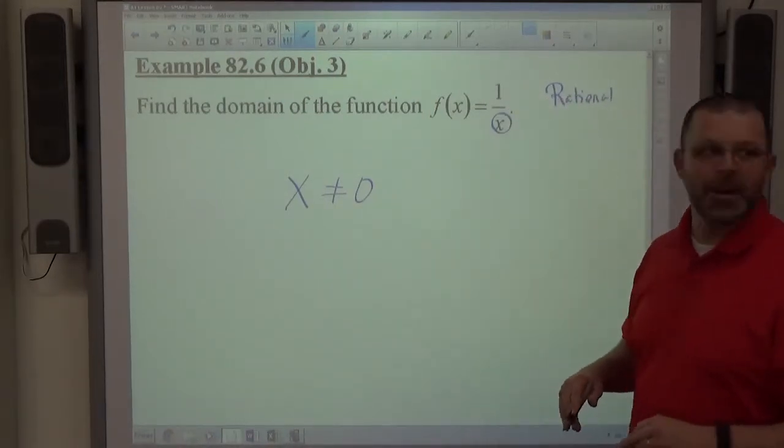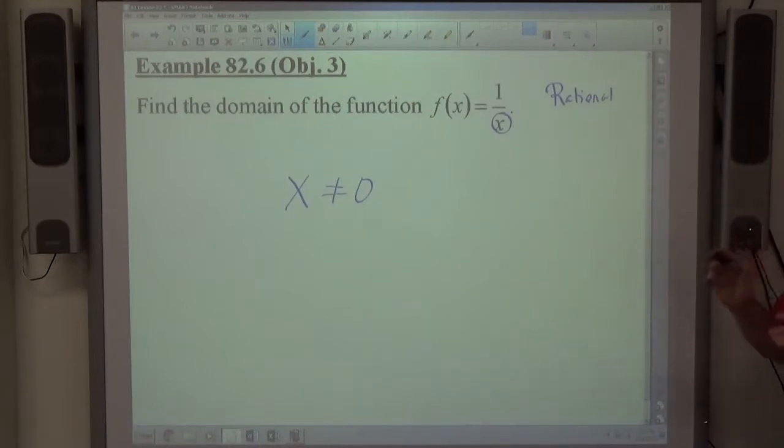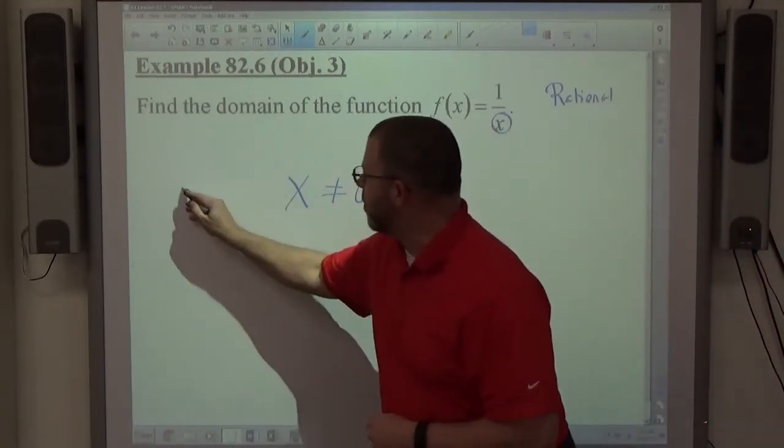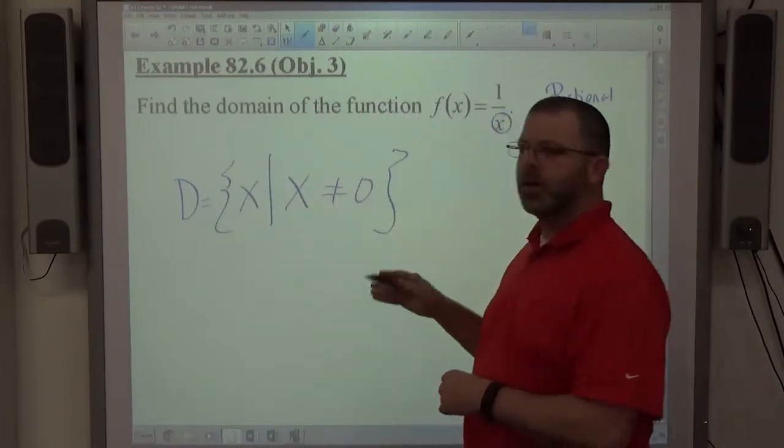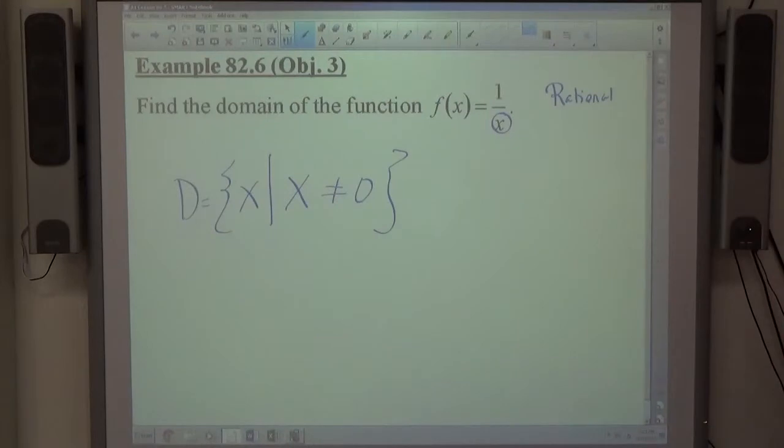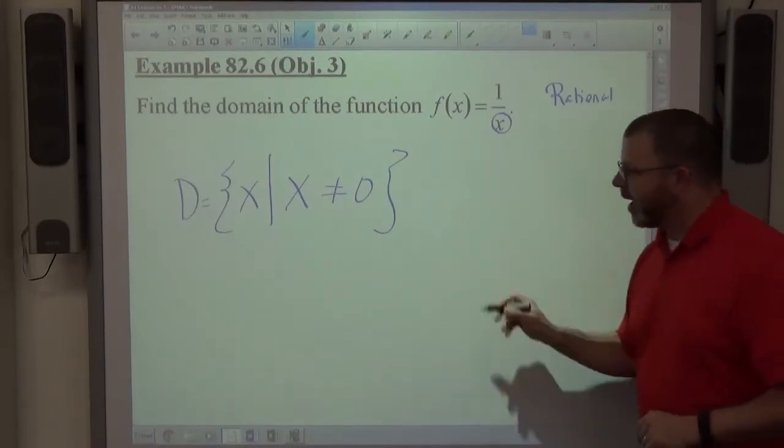But anyway, so x is not allowed to equal 0. So when I set a domain like that, domain equals the set of all x such that x does not equal 0, all that's saying is any number but 0 is allowed. All right? And that's it.